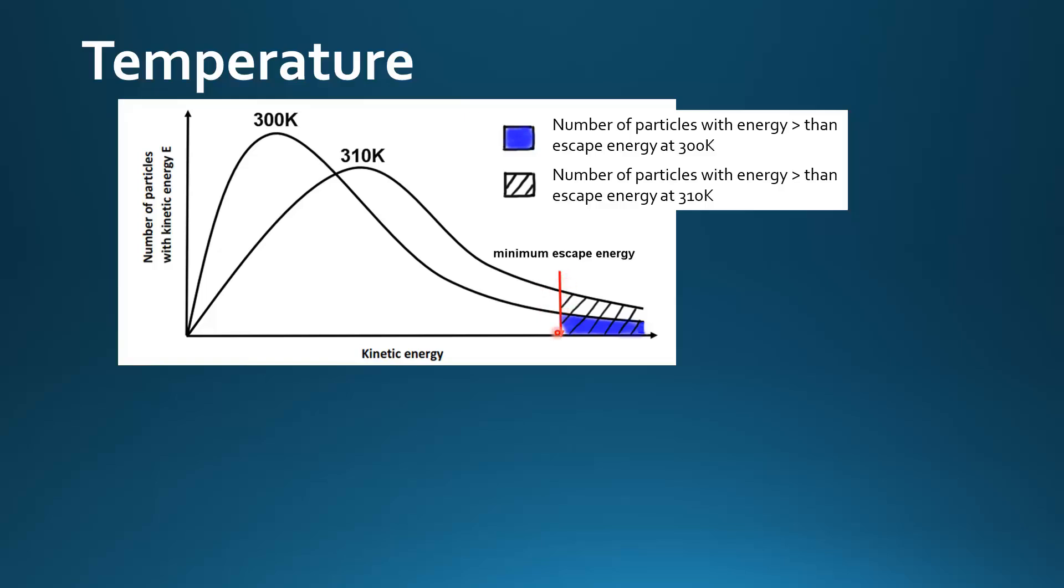This red arrow represents the minimum escape energy, which is defined as the minimum energy needed for a particle to escape the liquid phase and enter the vapor phase.